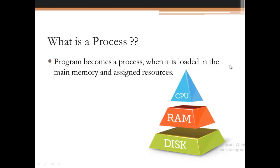A program becomes a process when it is loaded in the main memory and assigned resources. Our programs are permanently stored in secondary storage, or the hard disk. Whenever these programs are to be executed, a subset of the programs stored on the hard disk are transferred into memory. When transferred into memory, they are assigned resources — memory itself is one of the precious resources of the computer system.